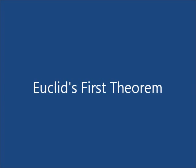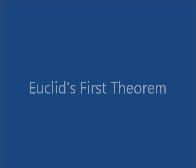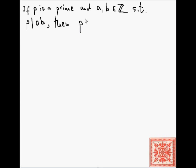Let's talk about Euclid's first theorem. The theorem says that if p is a prime and a, b are integers such that p divides their product, then p divides a, or p divides b, or both. But one is enough.